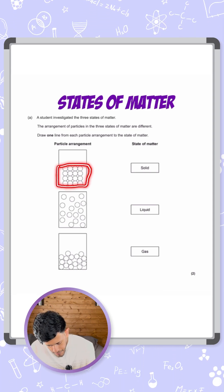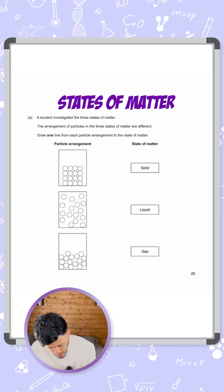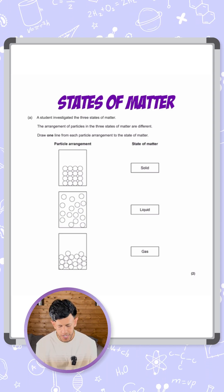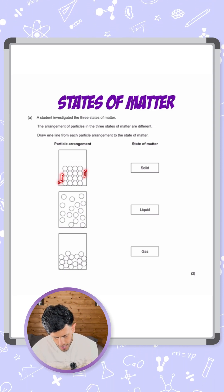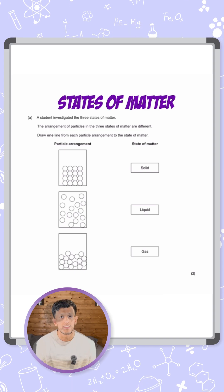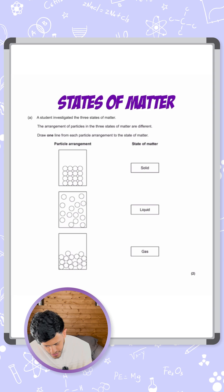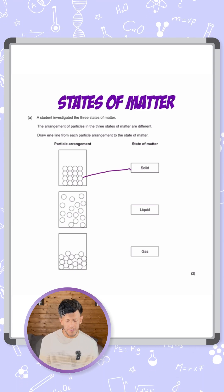They obviously don't flow around in the container. They're very fixed in their arrangement. So the only type of matter that has that fixed structure is a solid. The first one's a solid.